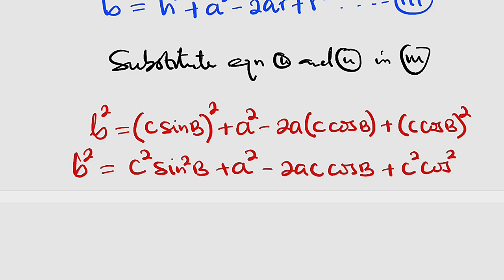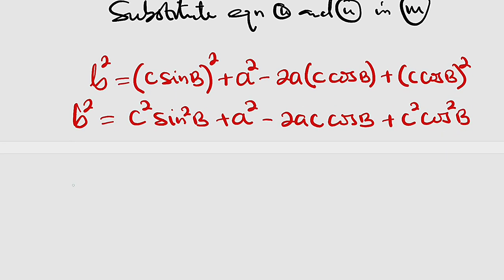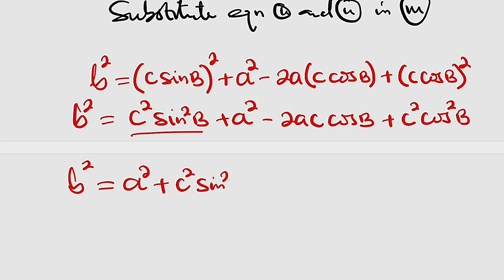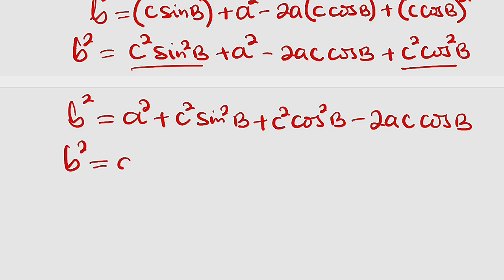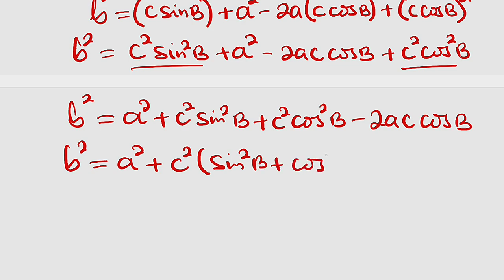Joining the terms together, we have b squared equal to a squared plus c squared sine squared B plus c squared cosine squared B minus 2ac cosine B. Factoring out c squared from the sine and cosine terms, we get b squared equals a squared plus c squared times (sine squared B plus cosine squared B) minus 2ac cosine B.